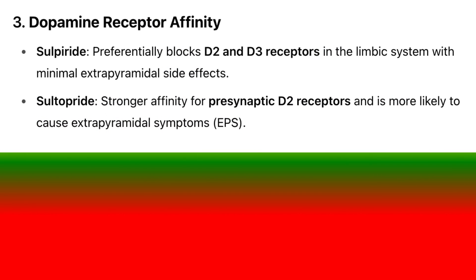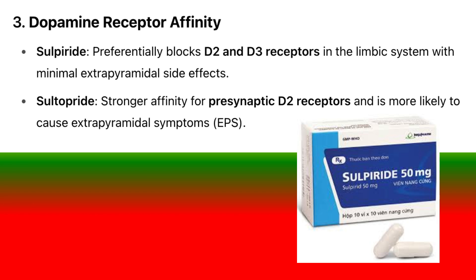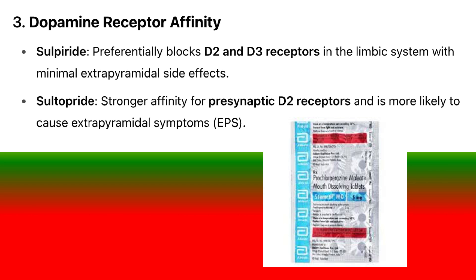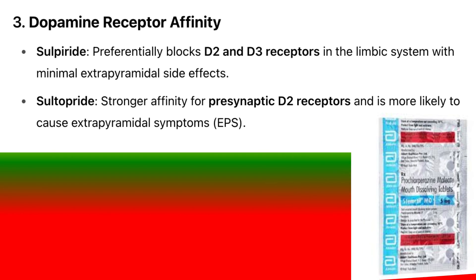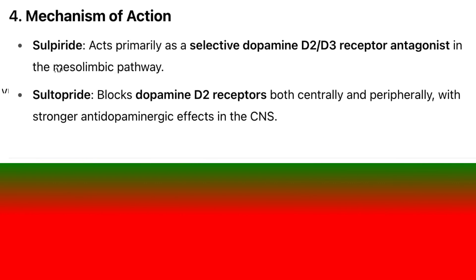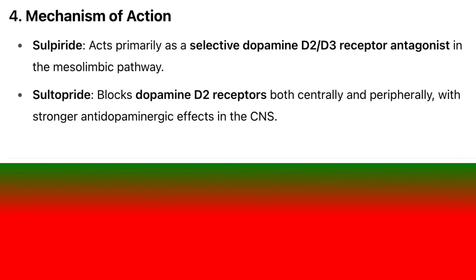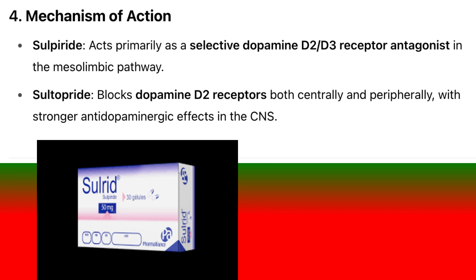3. Dopamine receptor affinity: Sulpiride preferentially blocks D2 and D3 receptors in the limbic system with minimal extrapyramidal side effects. Sultopride has stronger affinity for presynaptic D2 receptors and is more likely to cause extrapyramidal symptoms (EPS). 4. Mechanism of action: Sulpiride acts primarily as a selective dopamine D2-D3 receptor antagonist in the mesolimbic pathway. Sultopride blocks dopamine D2 receptors both centrally and peripherally with stronger antidopaminergic effects in the CNS.